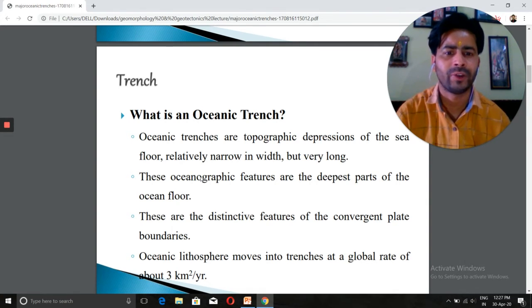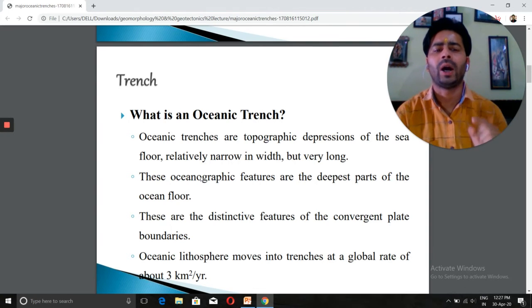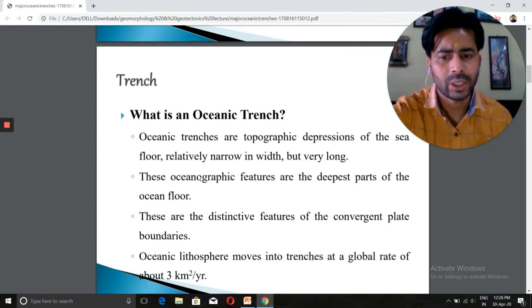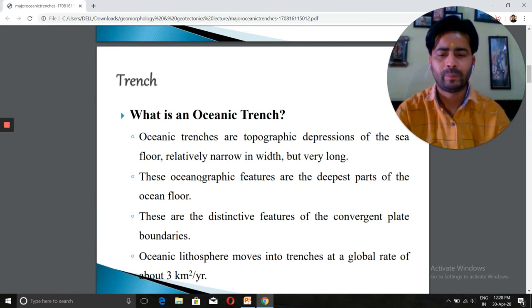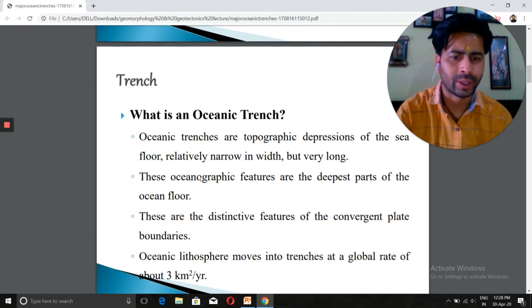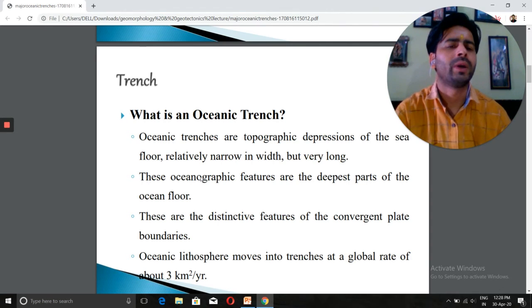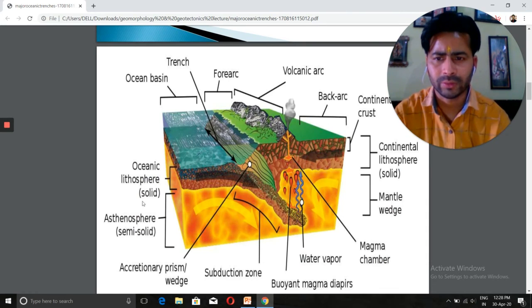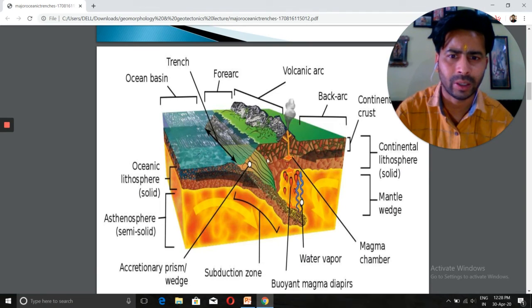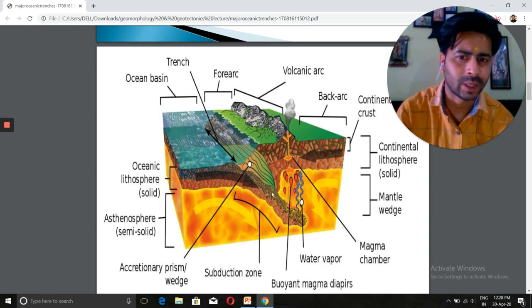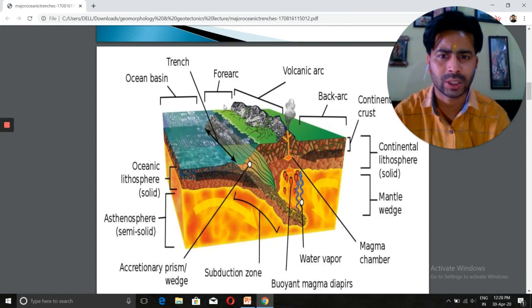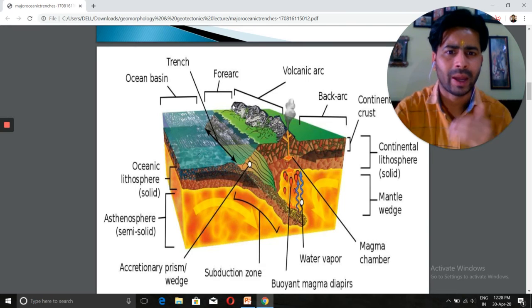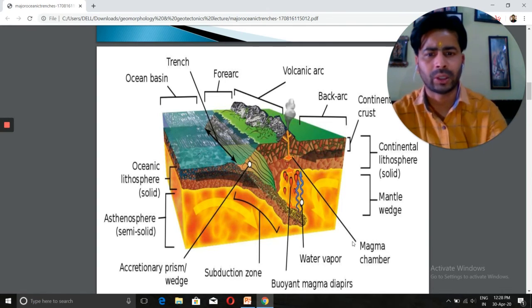The lithospheric plate, oceanic lithosphere, moves into the trenches at a global rate of about 3 square kilometers per year. That's the diagram showing the trenches where the oceanic lithospheric plates connect with the continental plate and the trenches are developing at the point of the subduction zone. Volcanic eruptions occur where melting material moves upward, creating volcanic arcs. The oceanic basins and volcanic arcs form the forearc and back arc regions.